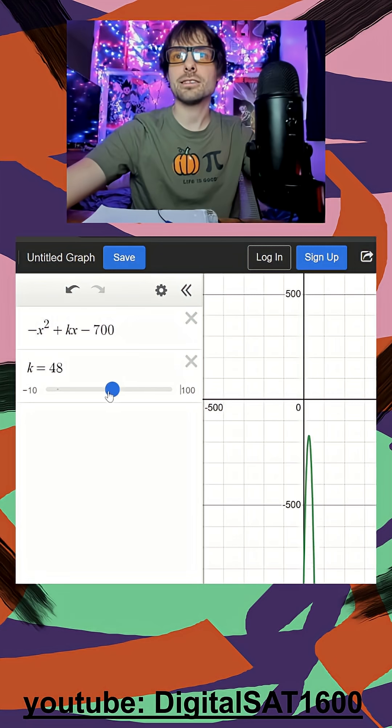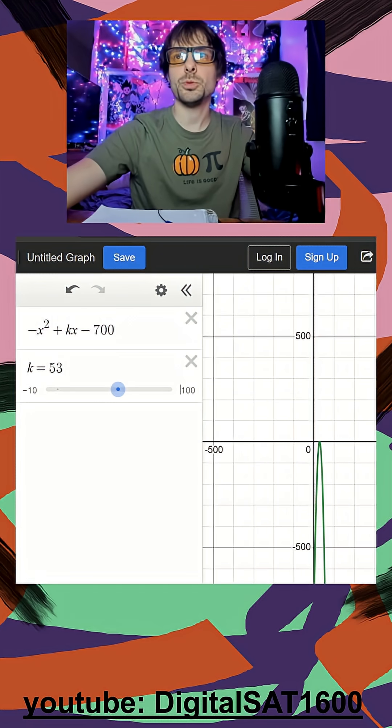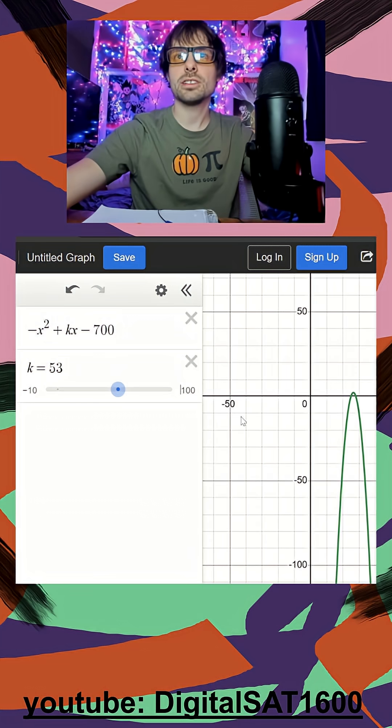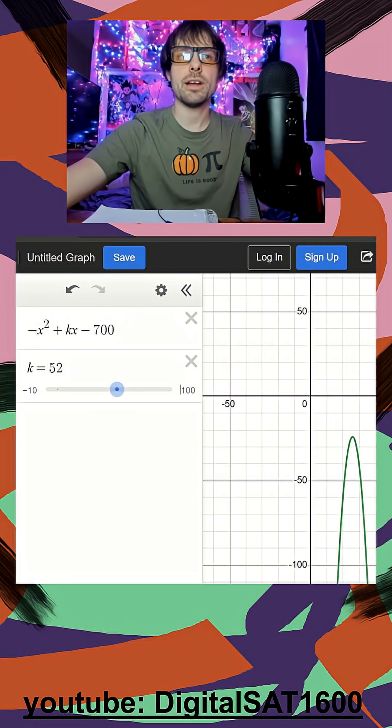And again, I want to get as close to this as possible. So I'll probably zoom in a lot here. And it looks like positively, it's going to be k is equal to 52. So I'm going to write that down on my paper. K equaling 52 is the biggest positive number.